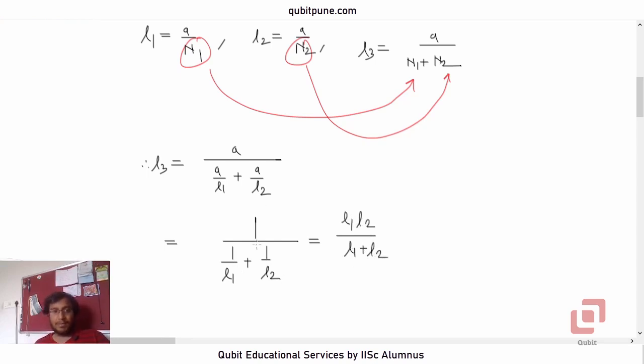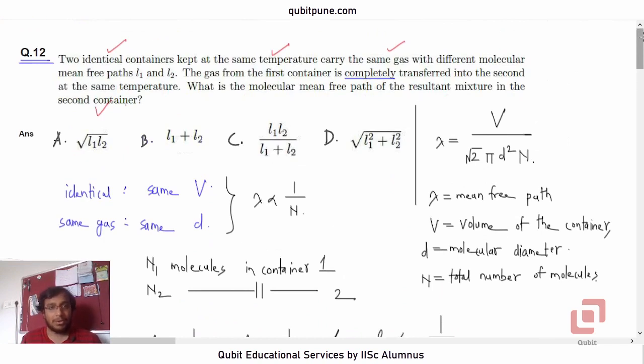First it will be 1 upon L1 plus L2 upon L1 L2, and then the denominator will go in the numerator. So the mean free path will be L1 L2 upon L1 plus L2, which is option C. The correct option is C.